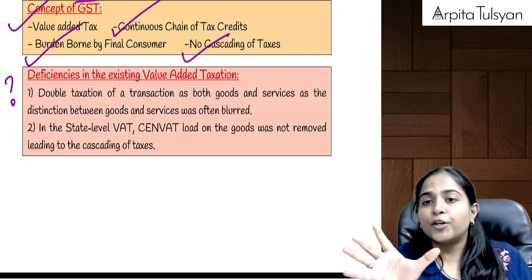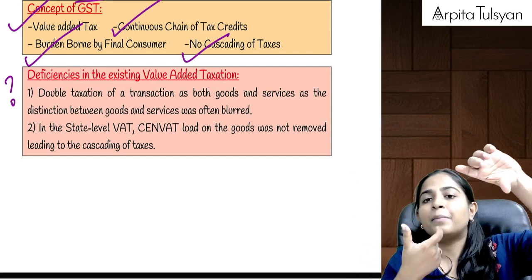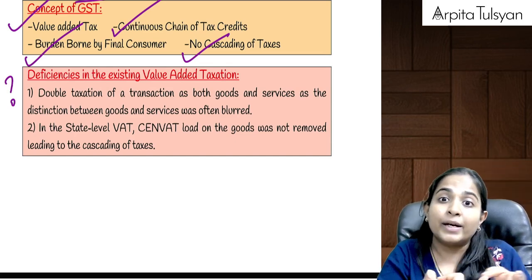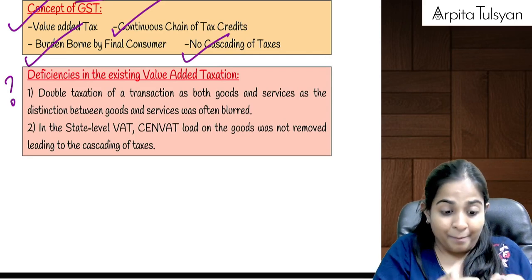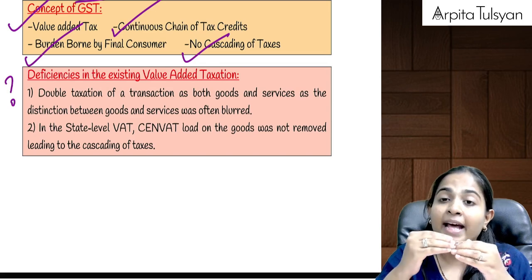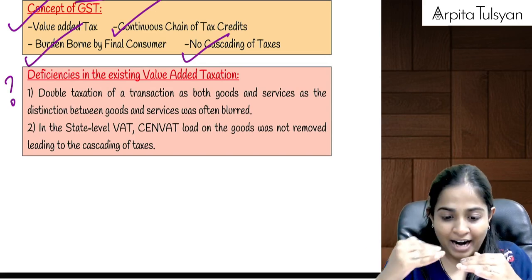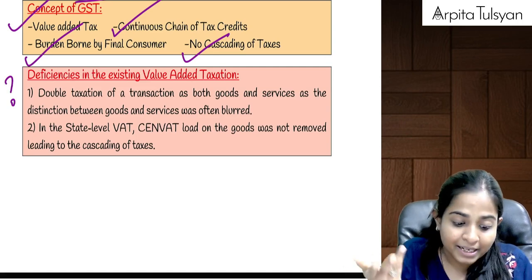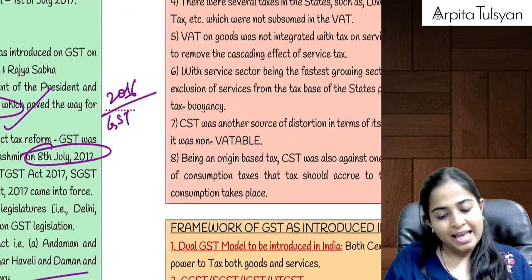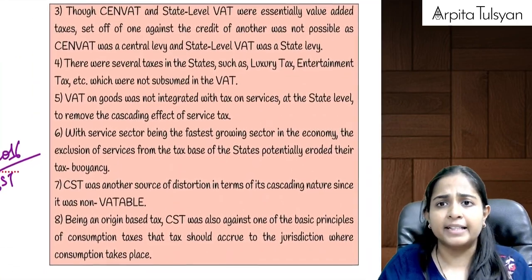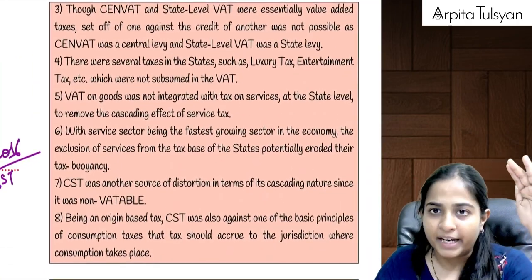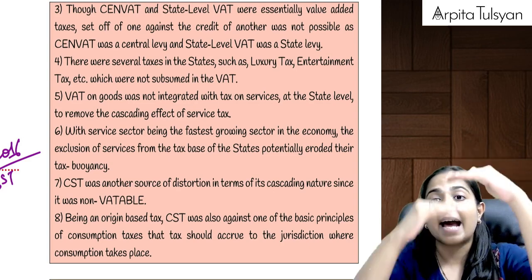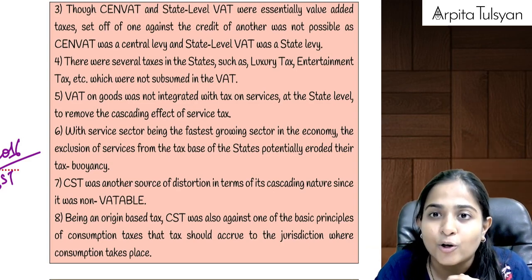Next, when on a particular product excise duty was applicable plus VAT was also applicable, VAT was charged on the value including excise duty. Means VAT was also taxed on the excise duty — tax on tax. This is nothing but multiple taxes getting applicable. You had already paid excise duty on the product and now you were also paying VAT on that product. You were not allowed any ITC, not allowed any set-off.